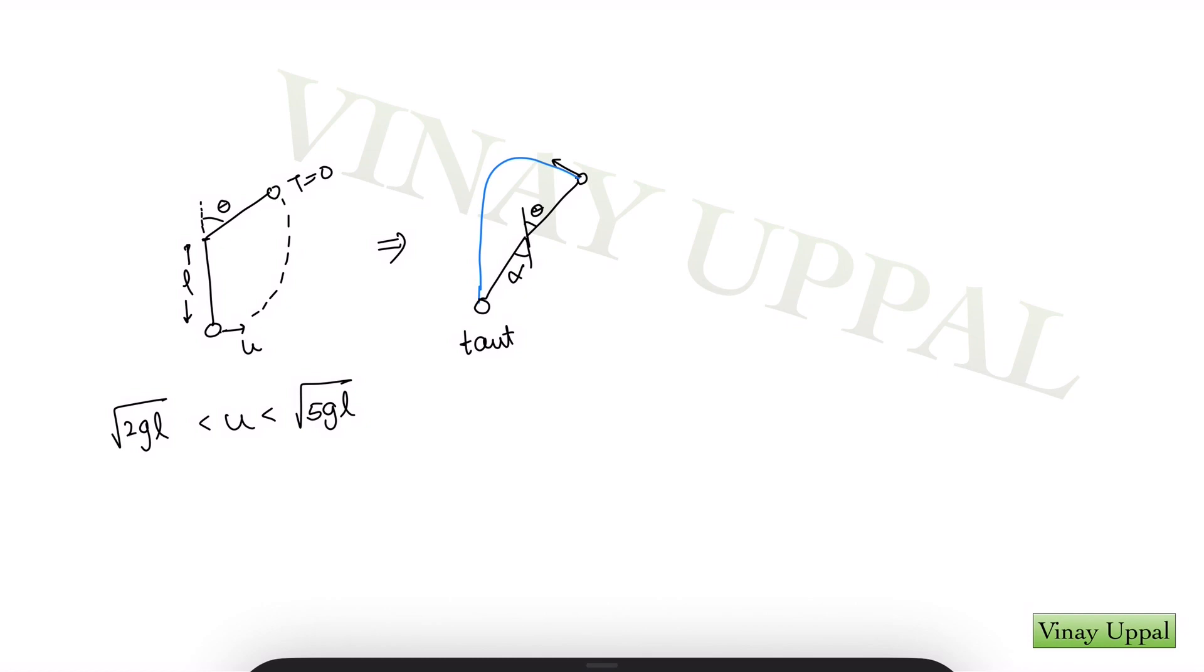And let's say that angle with the vertical where the string becomes taut again is alpha. The string will become taut again when the particle is at a distance of l again from point of suspension. Let's call that p. And the angle with the vertical, let's call that alpha. So alpha would be equal to pi minus 3 theta. This is a very useful equation that is not very commonly known.